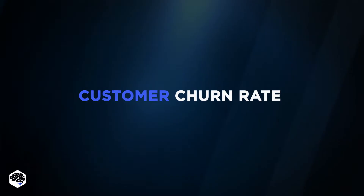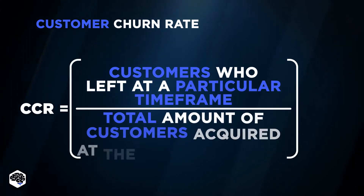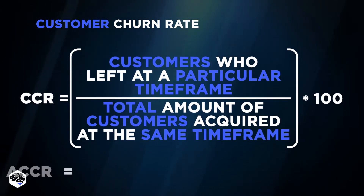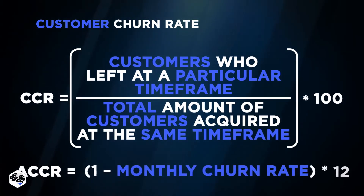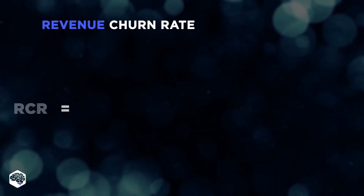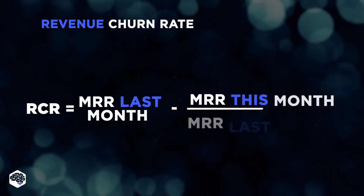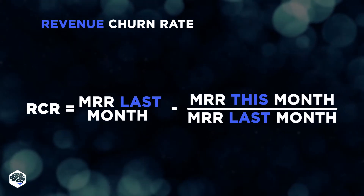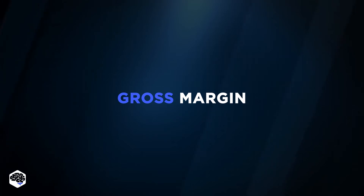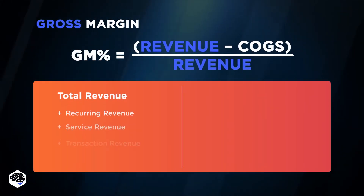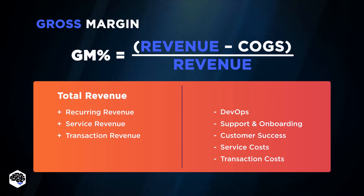Customer Churn Rate indicates the number of customers who left after signing on. Besides monthly figures, annual customer churn is essential too. Revenue Churn Rate indicates the rate of lost monthly recurring revenue due to subscription downgrades and unsubscribed customers. Gross Margin is a revenue ratio left after the withdrawal of costs for customer acquisition and service.